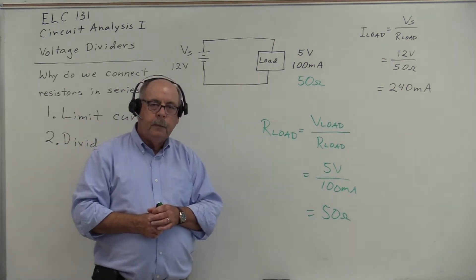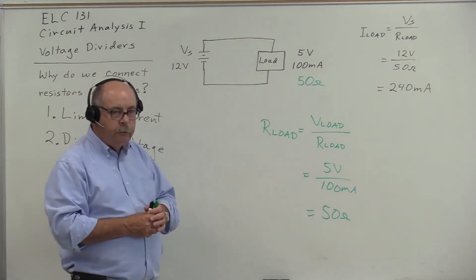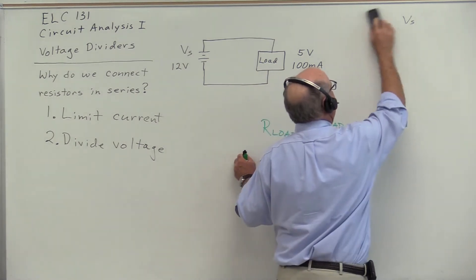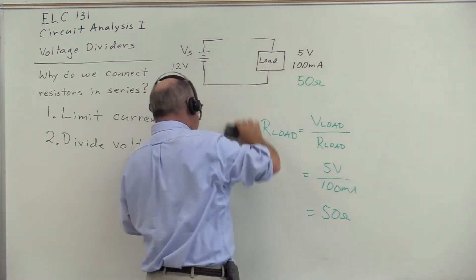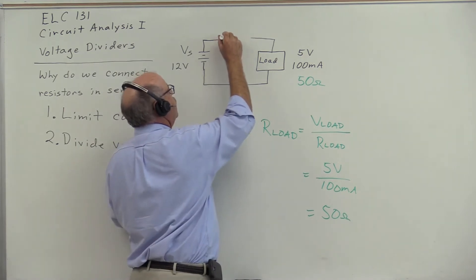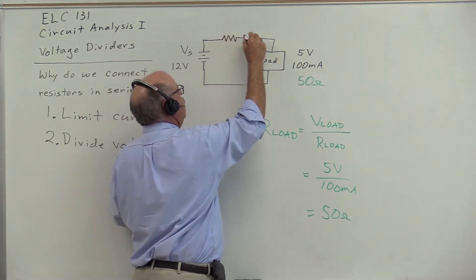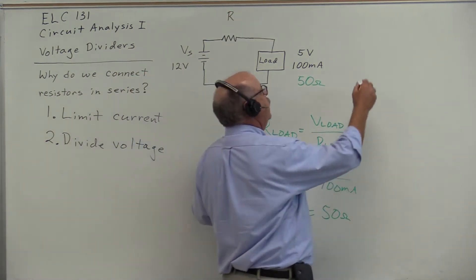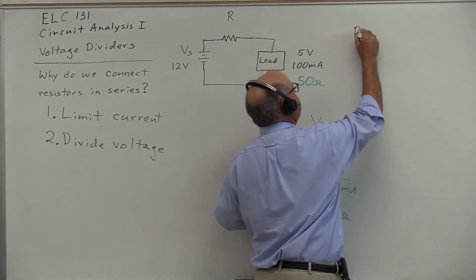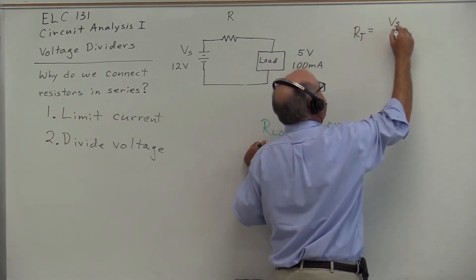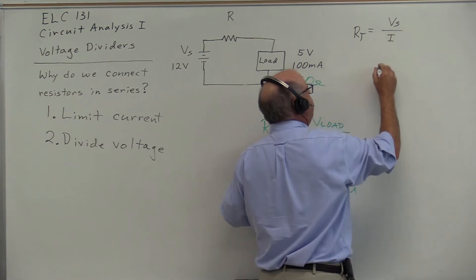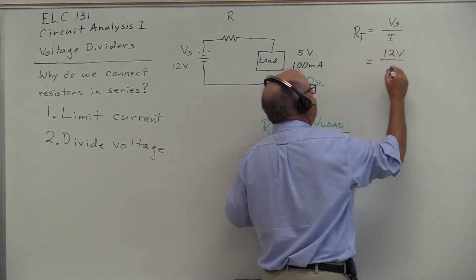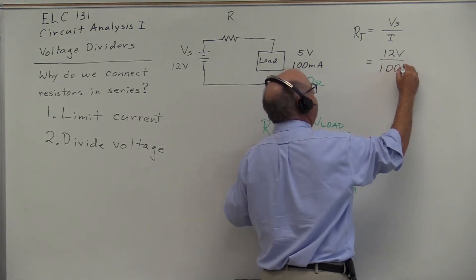How do we limit the current through the load? We have to add a resistor in series. We know that the total resistance R_T equals V_source divided by I. In this case, our source voltage is 12 volts, our current is 100 milliamps.